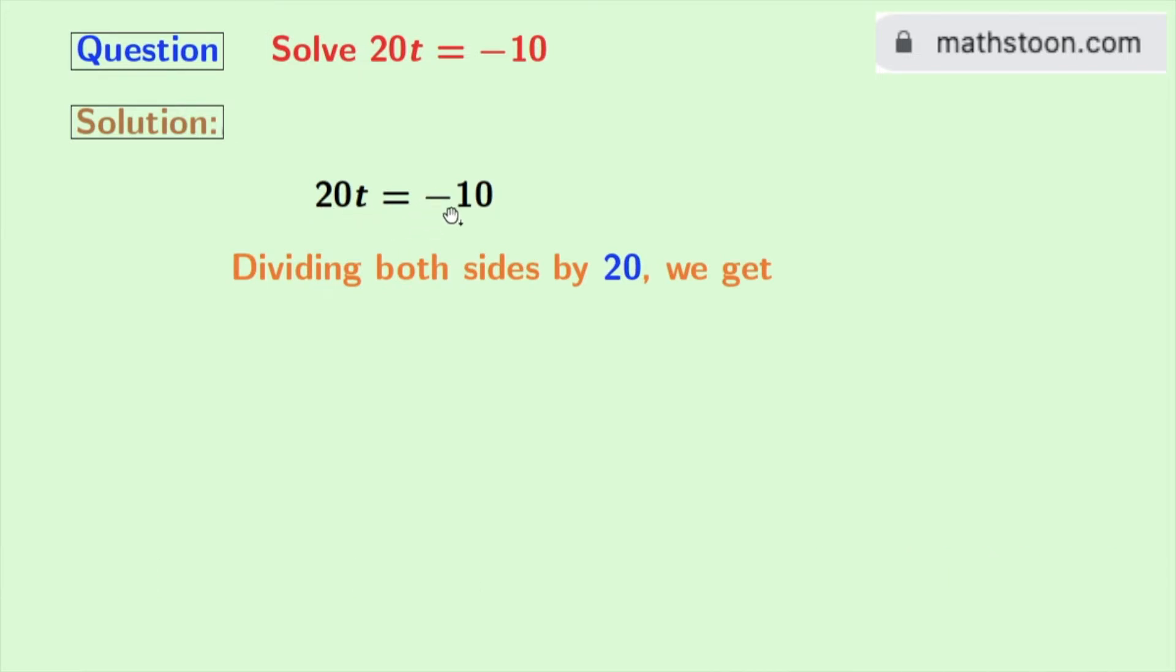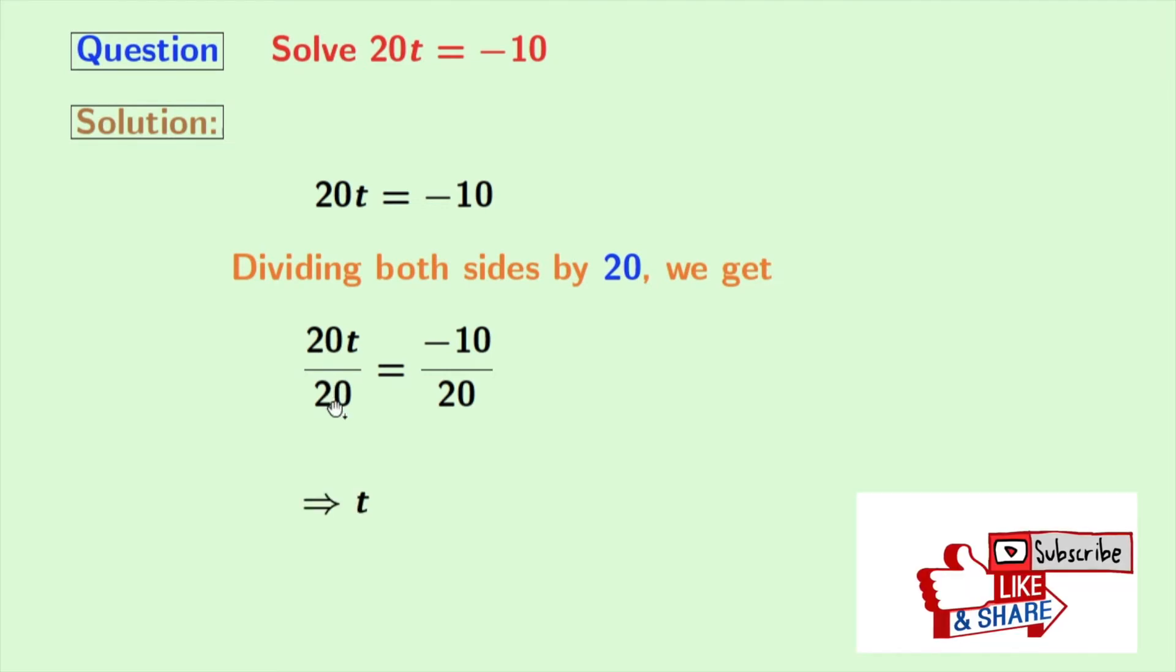Doing that we get 20t by 20 is equal to minus 10 by 20. So in the left-hand side 20 gets cancelled and we are left with t.